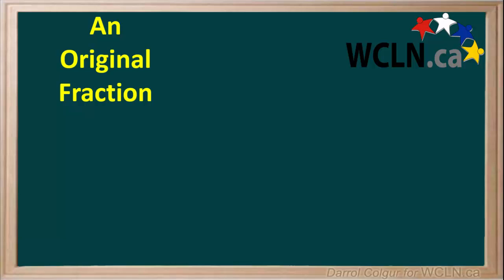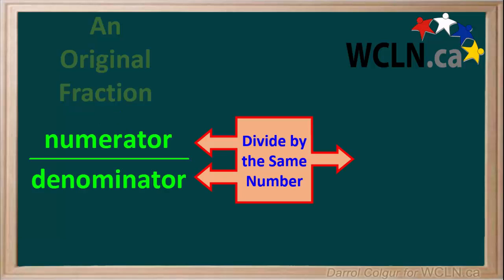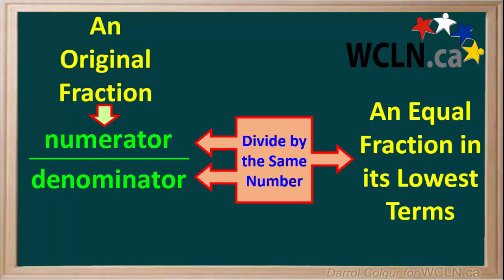To review, if we have an original fraction and we want to reduce it, we write the fraction with its numerator and denominator. Then if possible we find a number that we can divide both the numerator and the denominator by, and divide them both by that same number. And that gives us a fraction that is equal to the original fraction in value, but is now in its lowest terms.